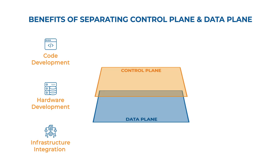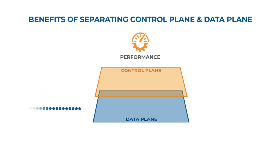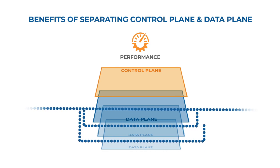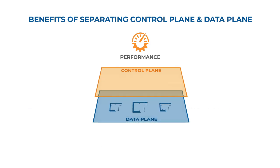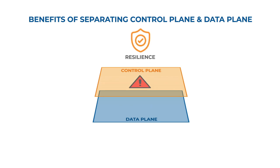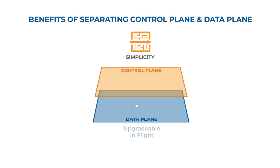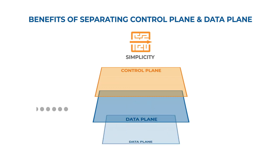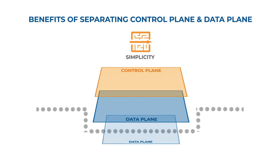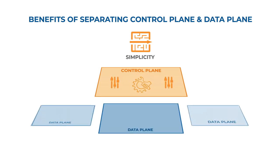This separation delivers noteworthy advantages. Performance: with control functions out of the way of data flow, data plane instances can be easily modulated to match bandwidth requirements, and data plane functions can run on specialized silicon for maximum performance while control functions run on a separate processor. Resilience: if there's a problem with the control plane, it should not hurt the data plane — if the control plane goes down, the data plane continues. Simplicity: software can be upgradable in flight to support continuous deployment. If functions need to change, you can instantiate a new data plane and route data to it without taking down the whole system.